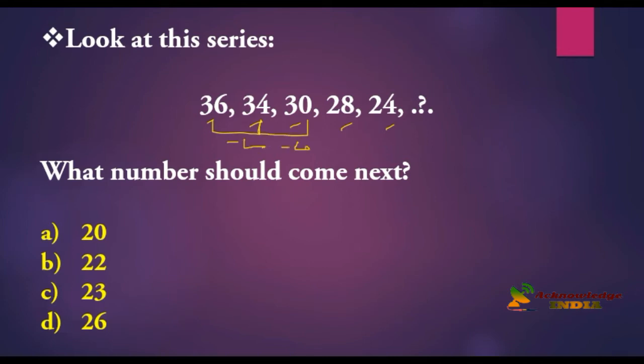And here minus 4: 30 minus 2 is equal to 28. Again, 28 minus 4 is equal to 24. Again, the alternative number is 24 minus 2 is equal to 22. So option B is the correct answer.